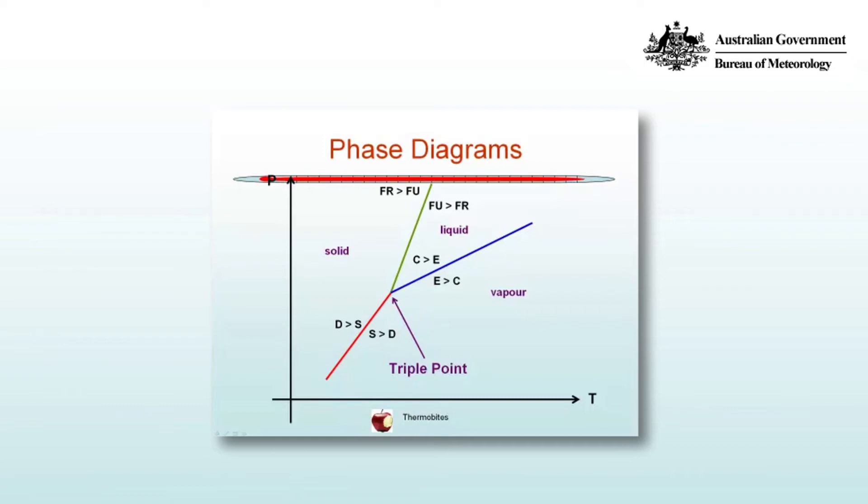Then consider the blue line, which is the line that separates liquid from vapor. In the liquid part of the diagram, the rate of condensation is greater than the rate of evaporation. And in the vapor section, the rate of evaporation is greater than the rate of condensation.